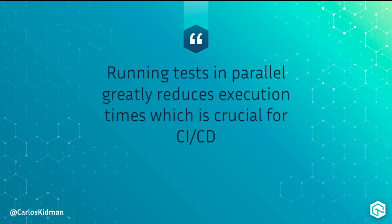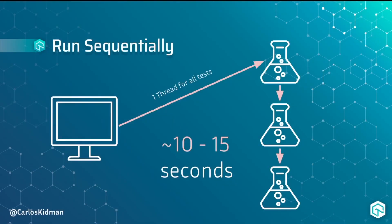It's up to you as the automation engineer to make sure your tests are designed in such a way that you can execute them in parallel and have short execution times. Running our tests one by one would take about 10 to 15 seconds. However, you're most likely going to be dealing with hundreds or thousands of tests, which would take hours if executed sequentially. Running them sequentially means that you are using one thread for all the tests, which is why only one test is executed at a time, as seen here.